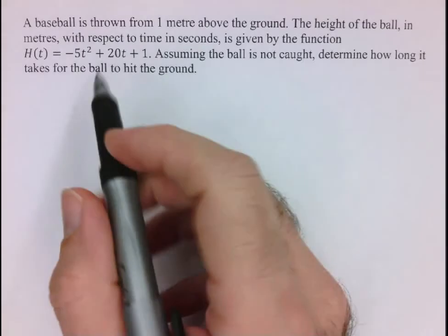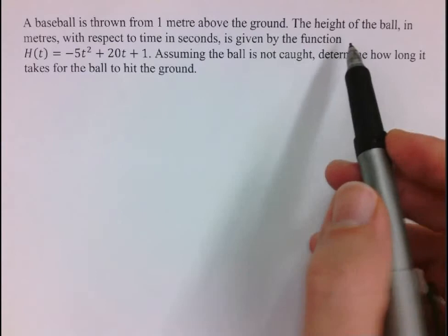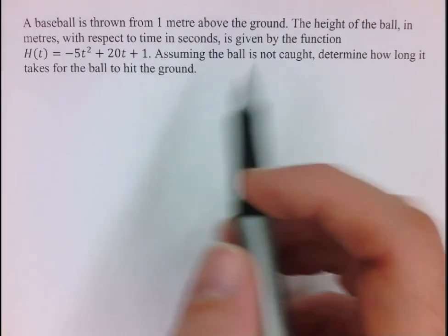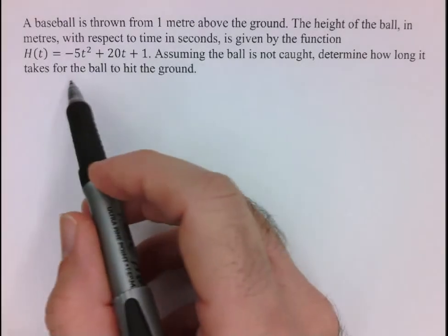So let's look at the question here, it tells us that a baseball is thrown from one meter above the ground, the height of the ball in meters with respect to time is given by this function here, and then they say, assuming the ball is not caught, determine how long it takes for the ball to hit the ground.